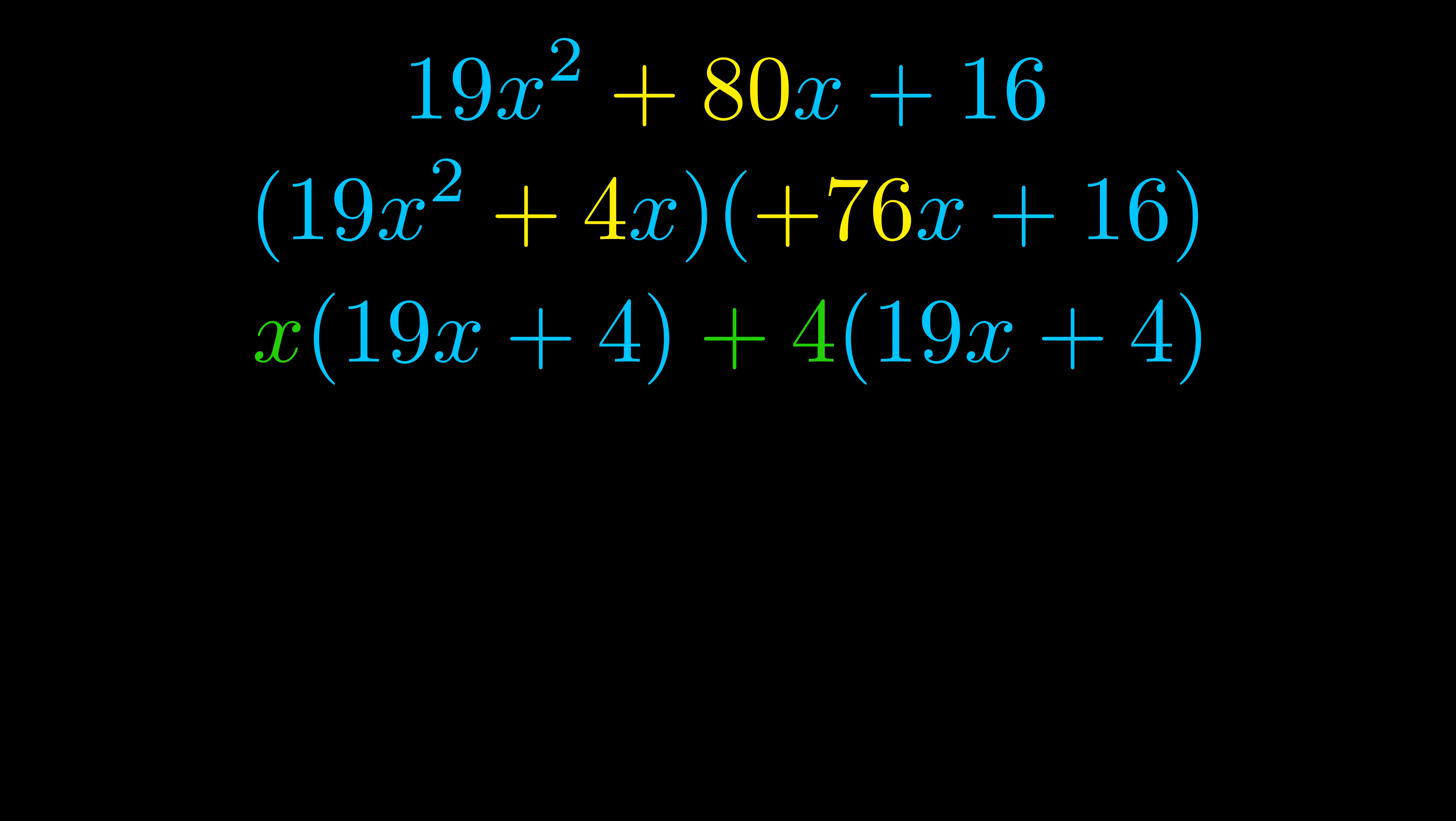Notice also how what remains inside of the parentheses is the same in both cases. The blue values are the same. Those blue values will become one of our factors and we will combine the two green values, the GCFs that we pulled out, to get the other one. And that is our fully factored equation.